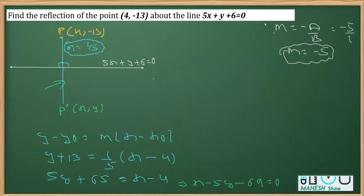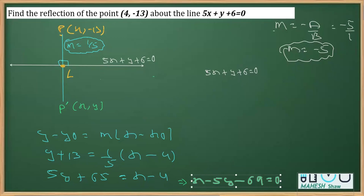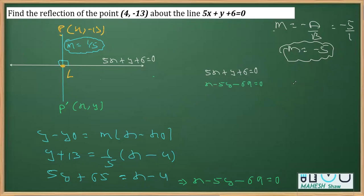Once we have the equation of line PP-dash, we find the intersection point L — the foot of the perpendicular. This is possible by solving the two equations simultaneously: the given line 5x + y + 6 = 0 and the line we just derived x - 5y - 69 = 0. We need to align coefficients before applying elimination.